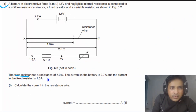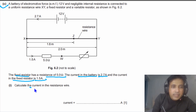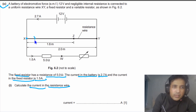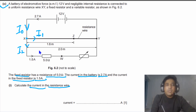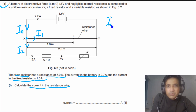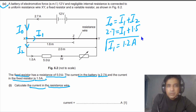For part C, the fixed resistor has a resistance of 5 ohms, current in the battery is 2.7 amps, and current in the fixed resistor is 1.5 amps. We need to calculate the current in the resistance wire. Calling the resistance wire current I1 and fixed resistor current I2, at the junction: I0 = I1 + I2, so 2.7 = I1 + 1.5, giving I1 = 1.2 amps.